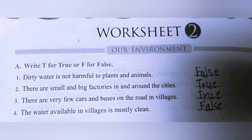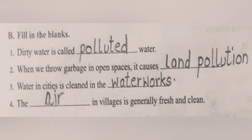Now Worksheet 2. Part A: Write T for True or F for False. First: Dirty water is not harmful to plants and animals — False. Second: There are small and big factories in and around the cities — True. Third: There are very few cars and buses on the road in villages — True. Fourth: The water available in villages is mostly clean — False.